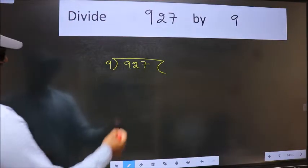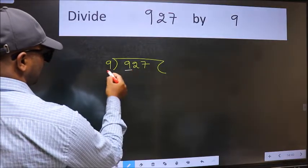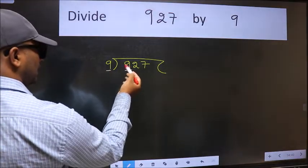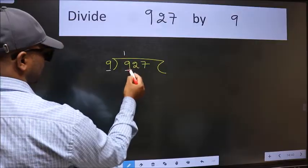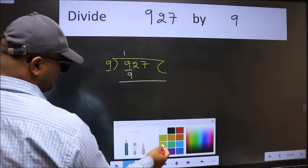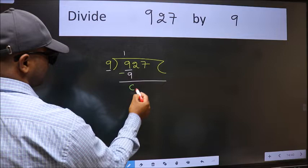Next, here we have 9 and here 9. When do we get 9 in 9 table? 9 ones is 9. Now, we should subtract. We get 0.